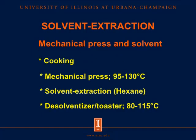For solvent extraction, both mechanical press and solvent are used to remove oil from canola and rapeseed. The seeds are cooked before moving to a mechanical press to remove 60 to 70 percent of oil. The remaining oil is then removed in a solvent extraction step using hexane. After that, the meal is moved to a desolventizer and toaster to recycle the hexane back for reuse in the solvent extraction step.